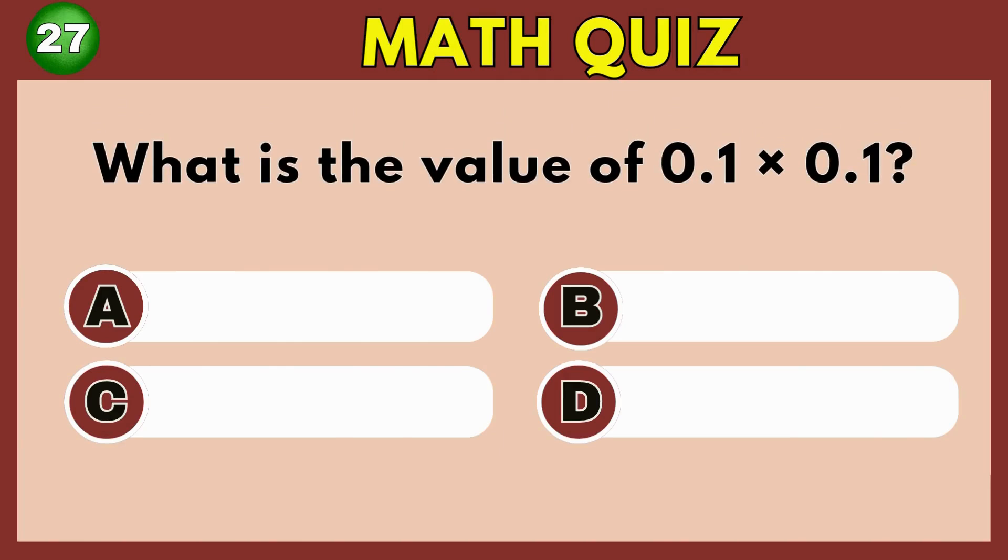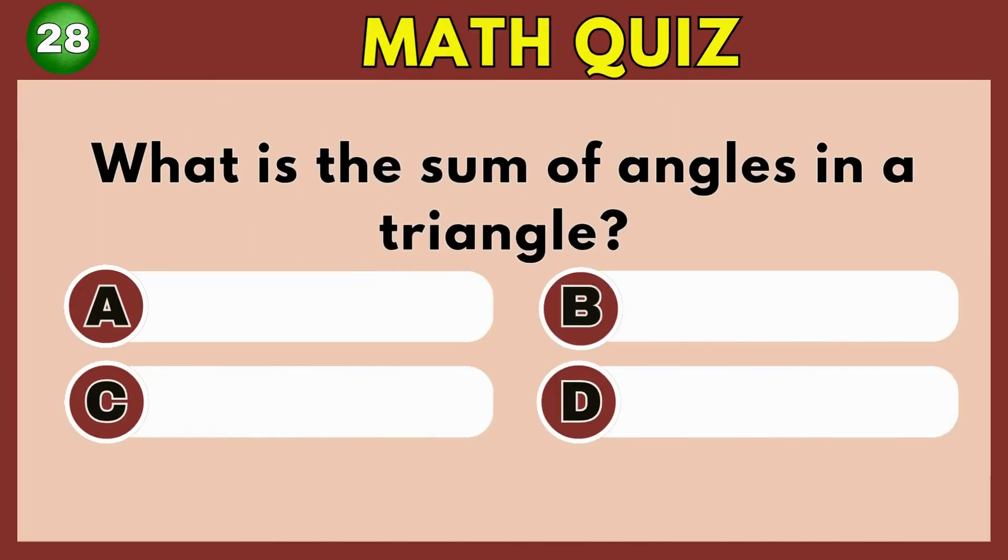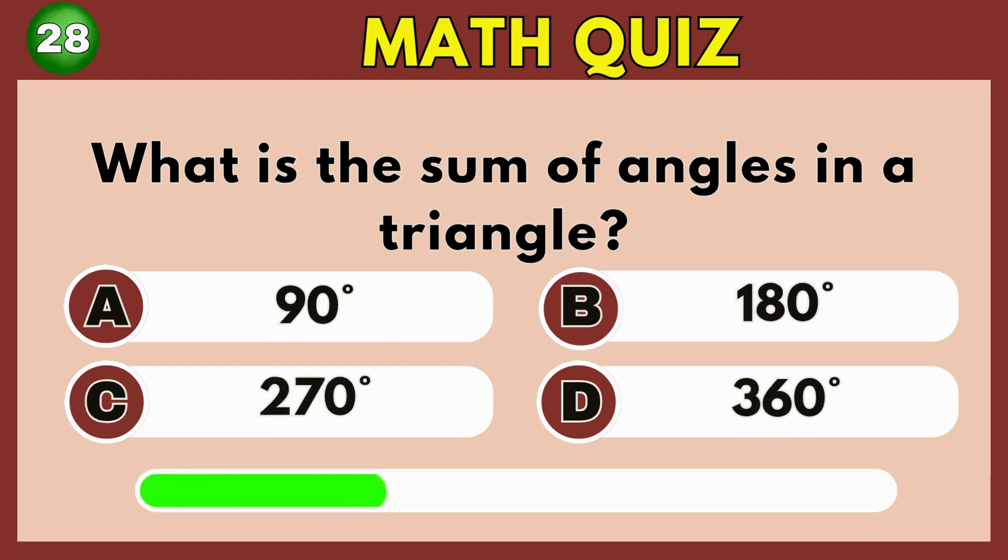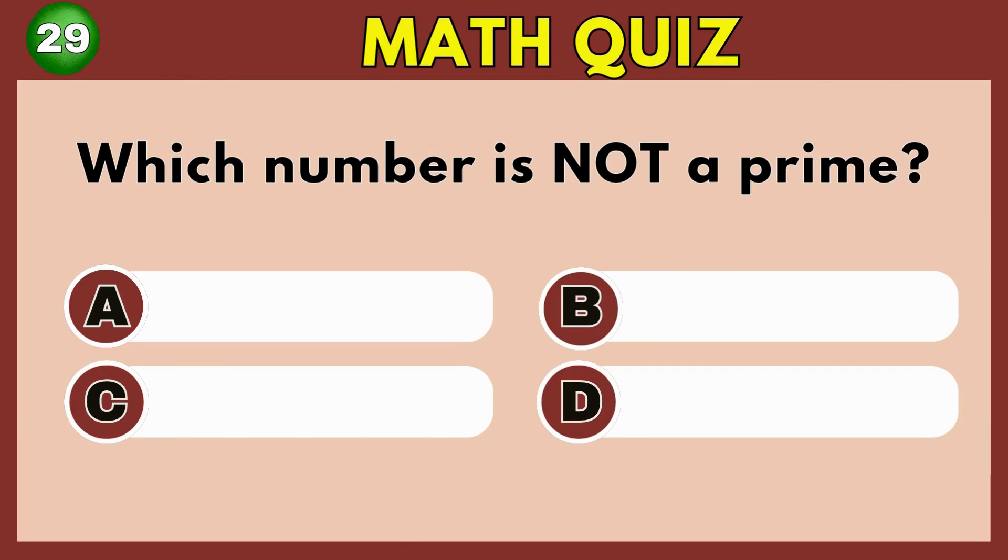What is 0.1 multiplied by 0.1? Option A. 0.01. What is the sum of all angles in a triangle? Option B. 180 degrees.